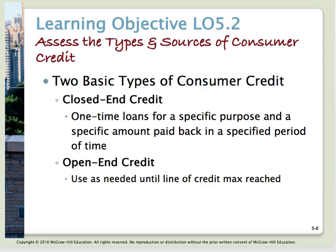Before we can make a decision to use credit, we need to know the types and sources of consumer credit available. There are two different types: closed-end credit and open-end credit. Closed-end credit is a one-time loan for a specific purchase for a specific amount, paid back in set periods of time — like a car purchase. For example, you borrow $5,000 for a used car with a $200 monthly payment for four years — a set amount paid at set intervals over a set period of time.